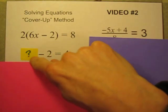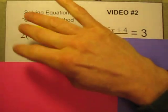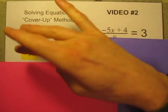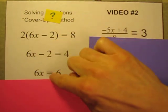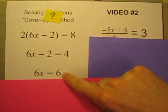So whatever is under here must be equal to six. In this case, six times x equals six. You can again keep track of this mentally or write it down. Six times x equals six. Let's do it one more time.